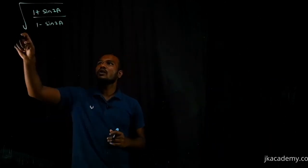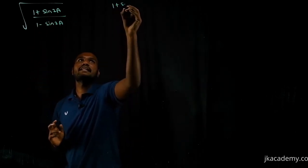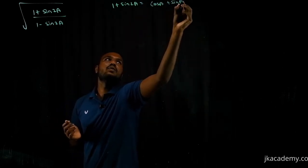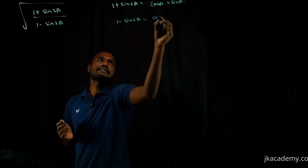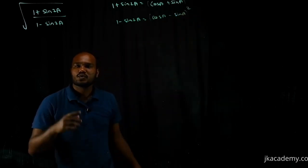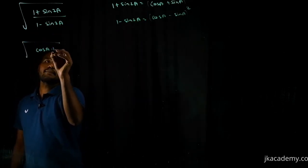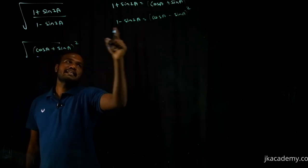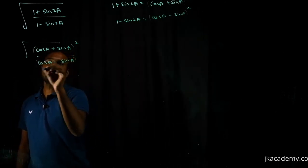Let's go to the next question: √((1 + sin 2a) / (1 − sin 2a)). To solve this, we need to know that 1 + sin 2a = (cos a + sin a)² and 1 − sin 2a = (cos a − sin a)². Let's substitute these into the formula.